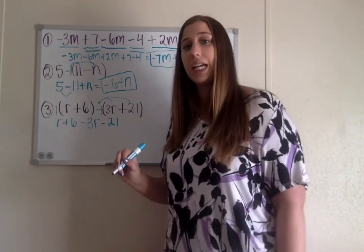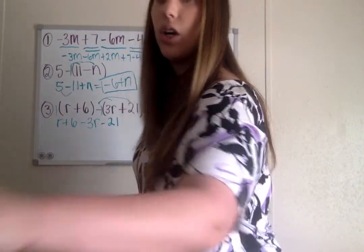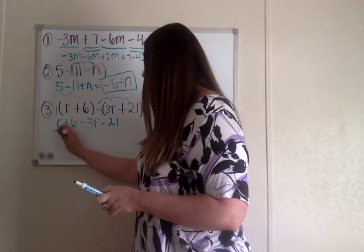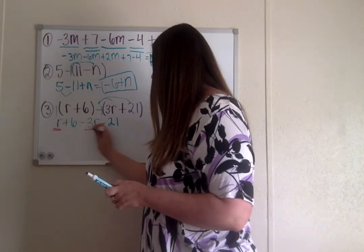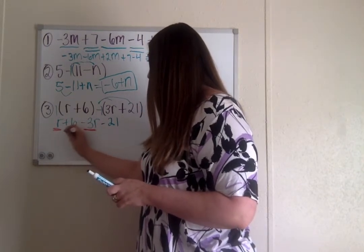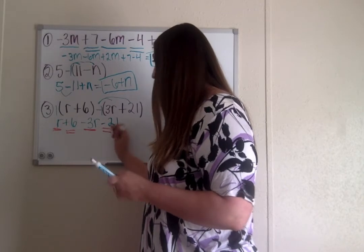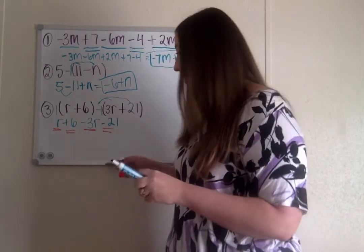From here again, we just have to look at our like terms. So we can see I have an r here, I see another r there, which leaves the 6 and the negative 21 to be separate.